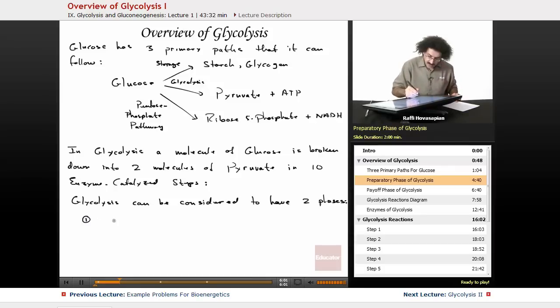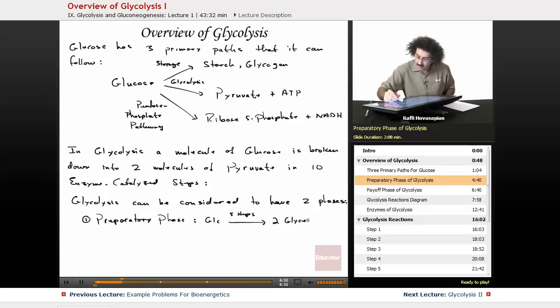So the first is called the preparatory phase or the investment phase. This is where glucose, in five steps, is converted to two molecules of glyceraldehyde-3-phosphate.